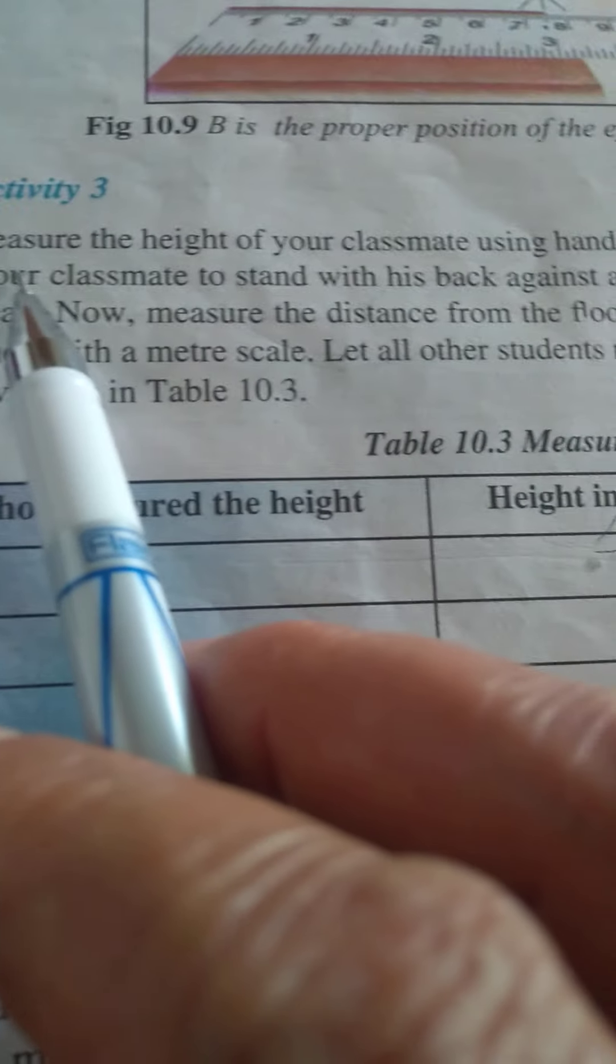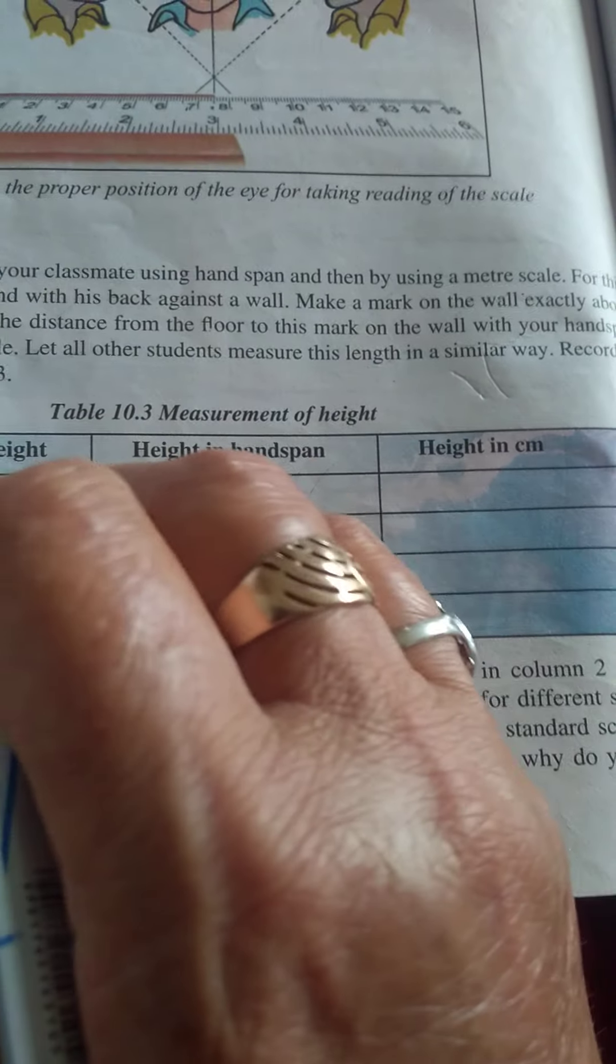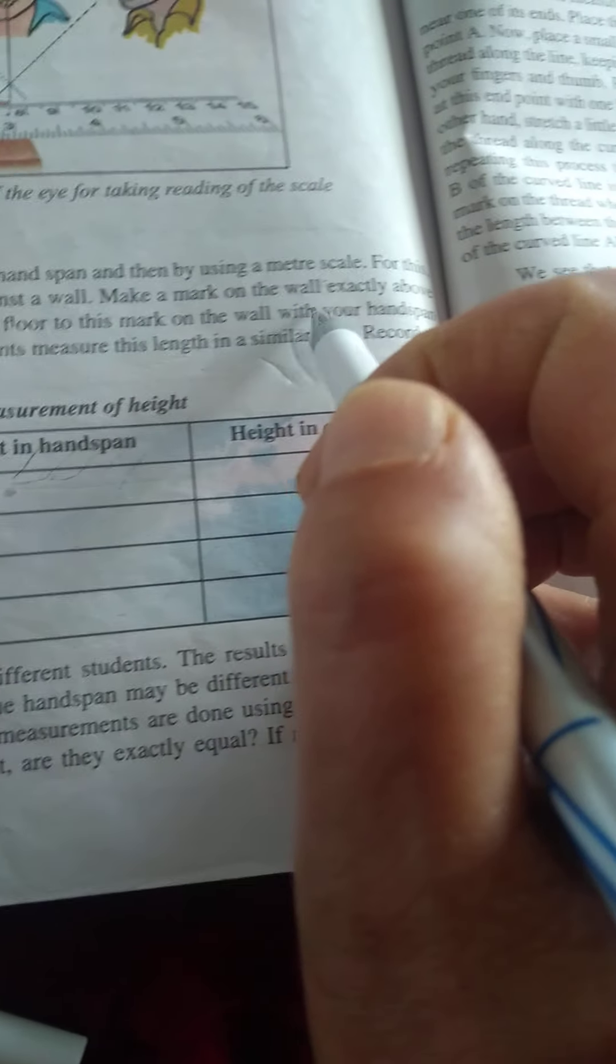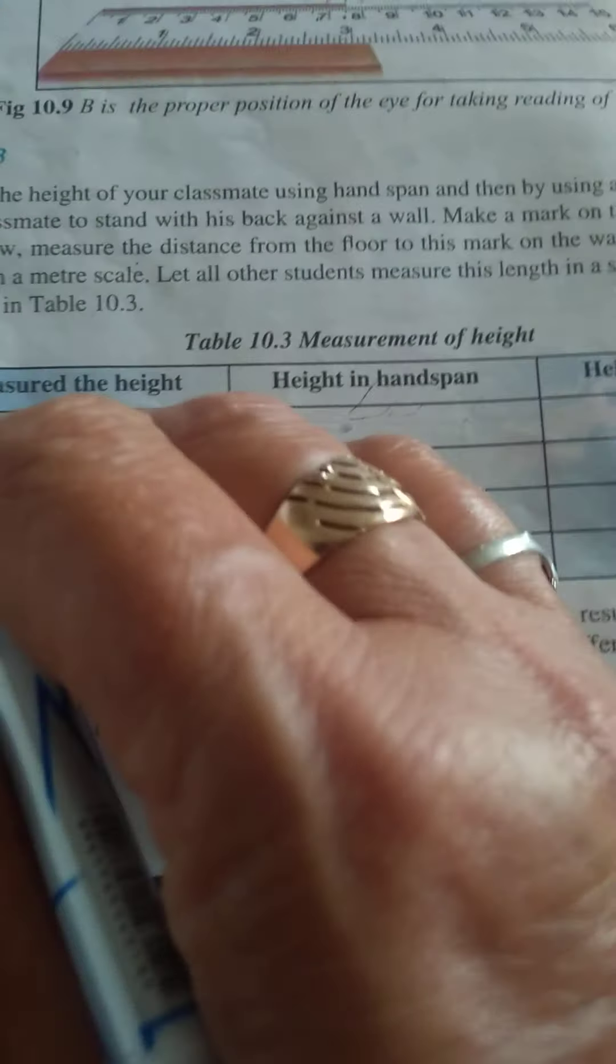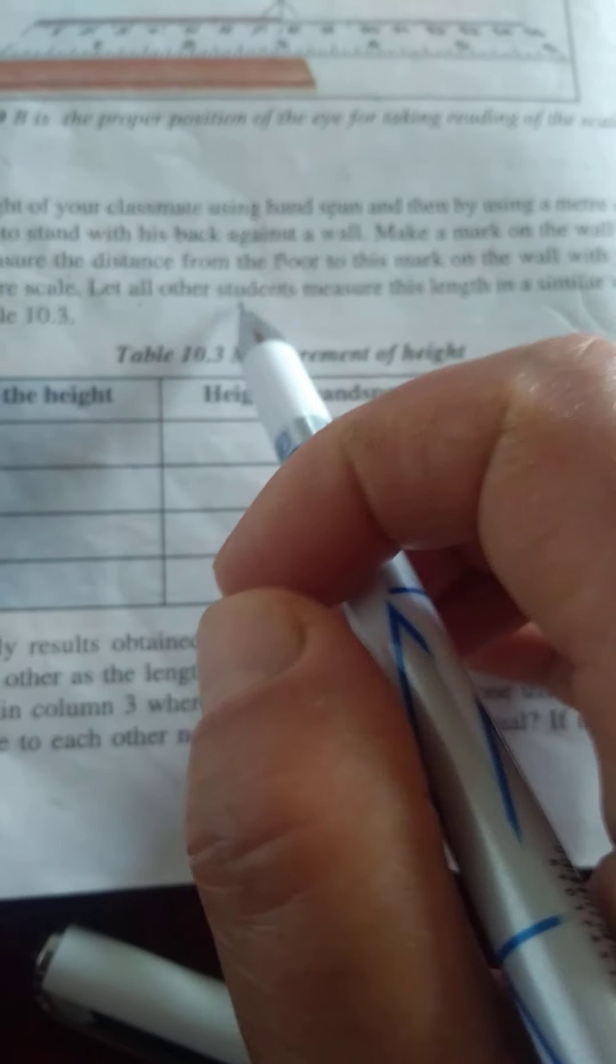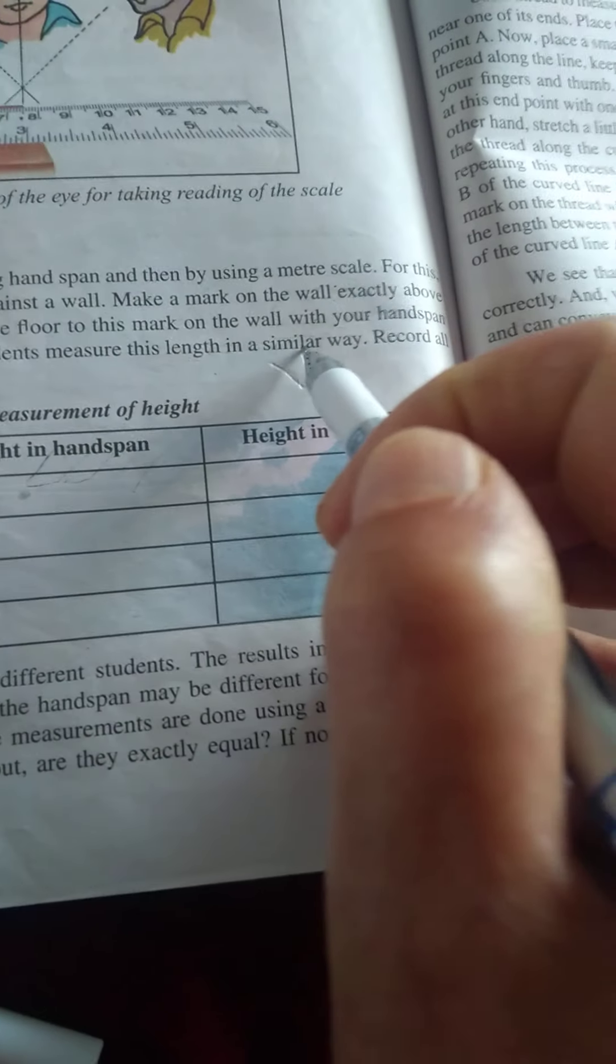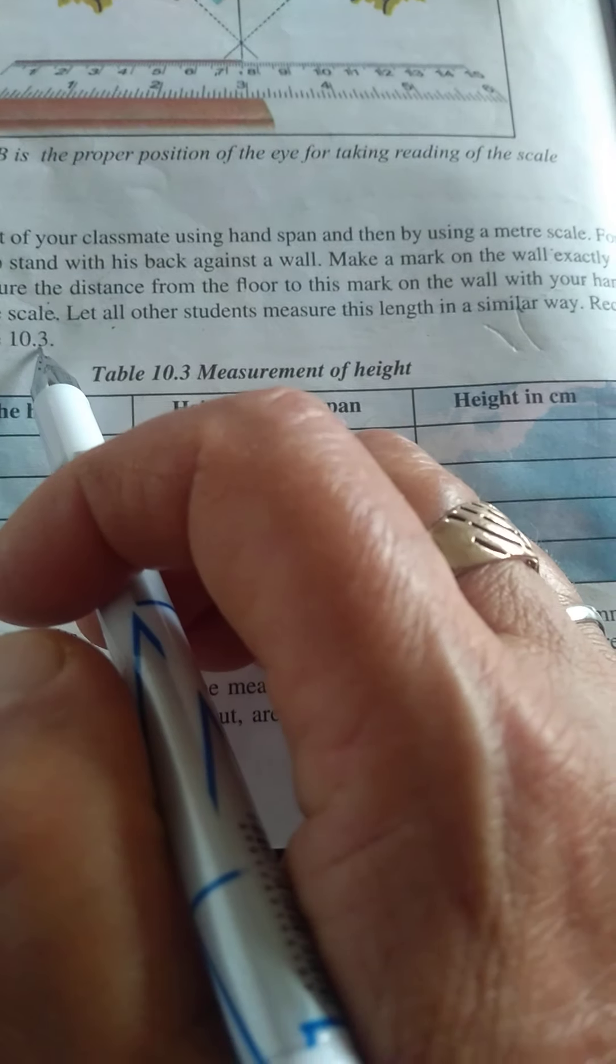Activity: Measure the height of your classmate using hand span and then by using a meter scale. For this, ask your classmate to stand with his back against a wall. Make a mark on the wall exactly above his head. Now measure the distance from the floor to this mark on the wall with your hand span and then with a meter scale. Let all other students measure this length in a similar way. Record all observations in table 10.3.